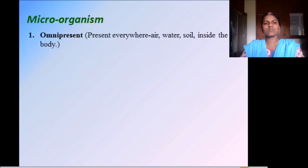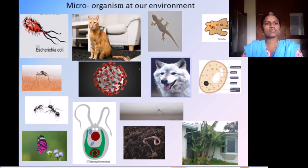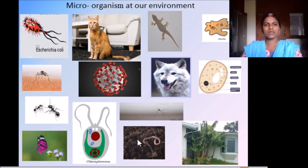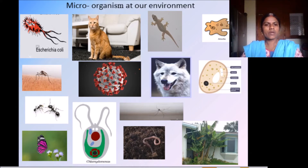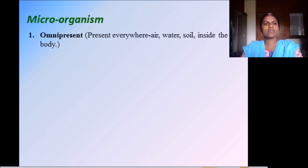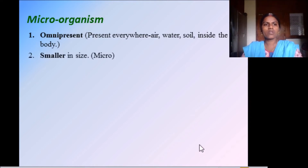So what are microorganisms? As I showed in the last slide, these are the microorganisms: E. coli bacteria, Amoeba, Coronavirus, Yeast as a fungi, Chlamydomonas as algae, etc. These microorganisms also live with us in our environment, but we could not see them with our naked eyes — they can be seen only through the microscope. These microorganisms are omnipresent — meaning they will be present everywhere: in air, water, soil, inside the body, and also inside animals' bodies.